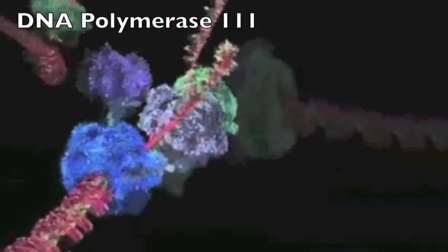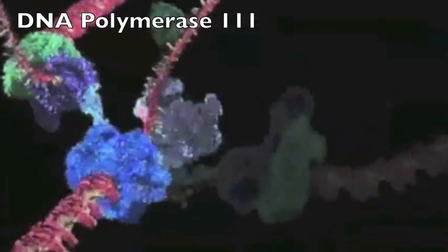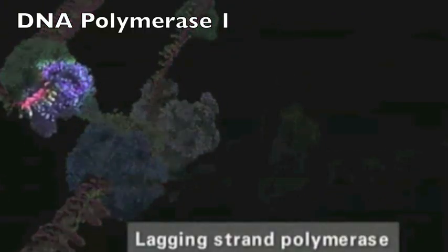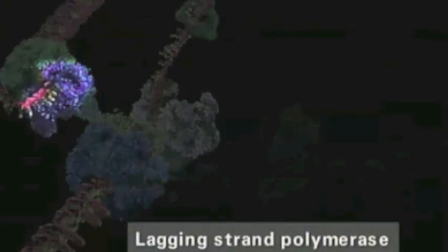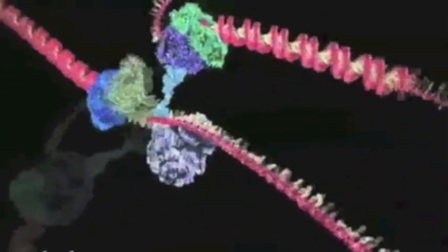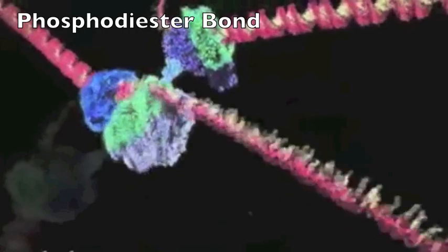DNA polymerase 3 lays nucleotides in between the pieces of RNA primer. DNA polymerase 1 then replaces the RNA primers with nucleotides. DNA ligase finishes the process up by fusing the broken segments, forming a phosphodiester bond.